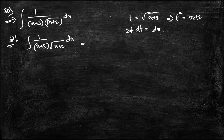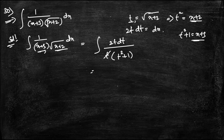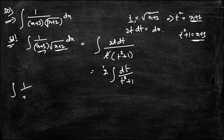Substituting: dx = 2t dt, √(x+2) = t, and x+3 = t²+1. The integral becomes ∫2t dt / (t·(t²+1)) = 2∫dt/(t²+1).